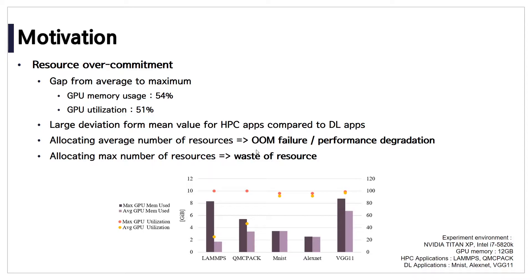If we allocate only the average memory usage, there may be an OOM failure. In terms of utilization, performance degradation may occur. If we allocate max resource usage, resources can be wasted since applications do not always use their maximum values.